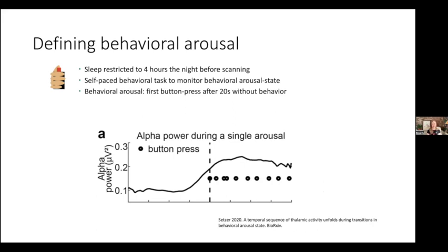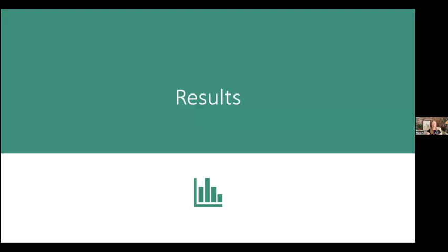First we wanted to look at EEG alpha power during behavioral arousal to confirm this was actually a genuine arousal state transition and not just someone getting a hand cramp. In this demonstration from a single behavioral arousal — black dots are button presses, the dotted line is behavioral arousal — you can see an increase in alpha power at arousal, which is a marker of wakefulness, confirming the subject was awakening from sleep.